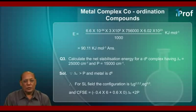Since Δₒ is more than P and the metal is d⁶, therefore for a strong ligand field, the configuration is t2g⁶ eg⁰. And CFSE will be equal to -0.4 × 6 + 0.6 × 0 times Δₒ plus 2P.